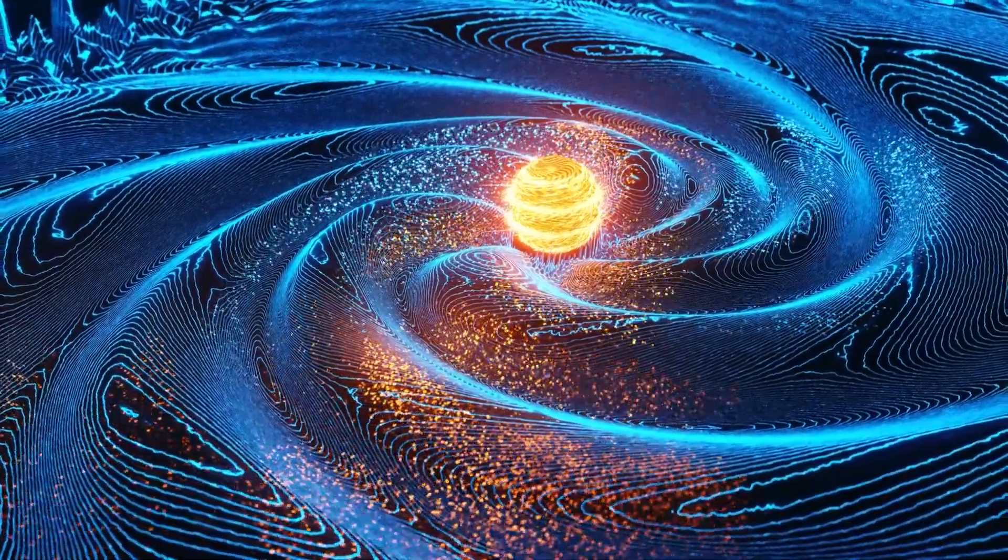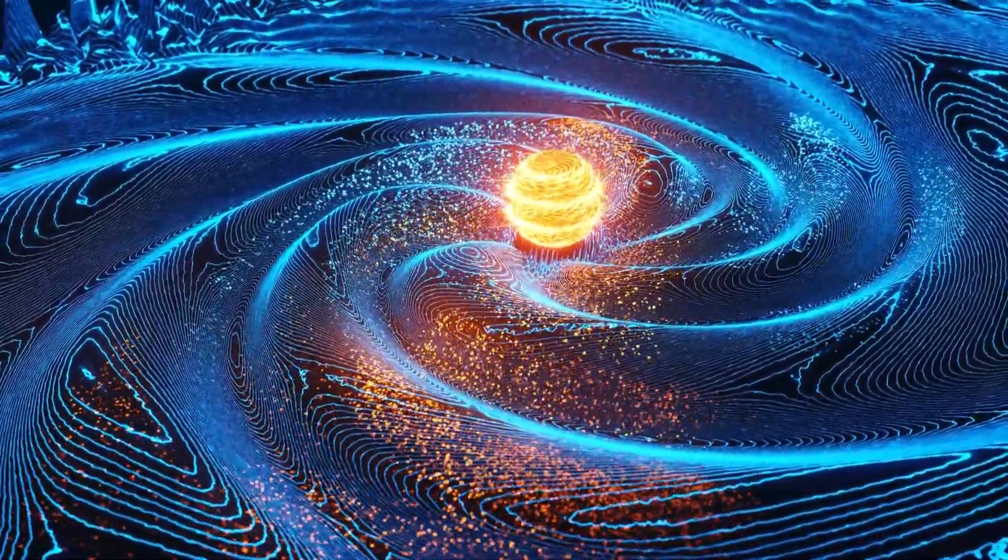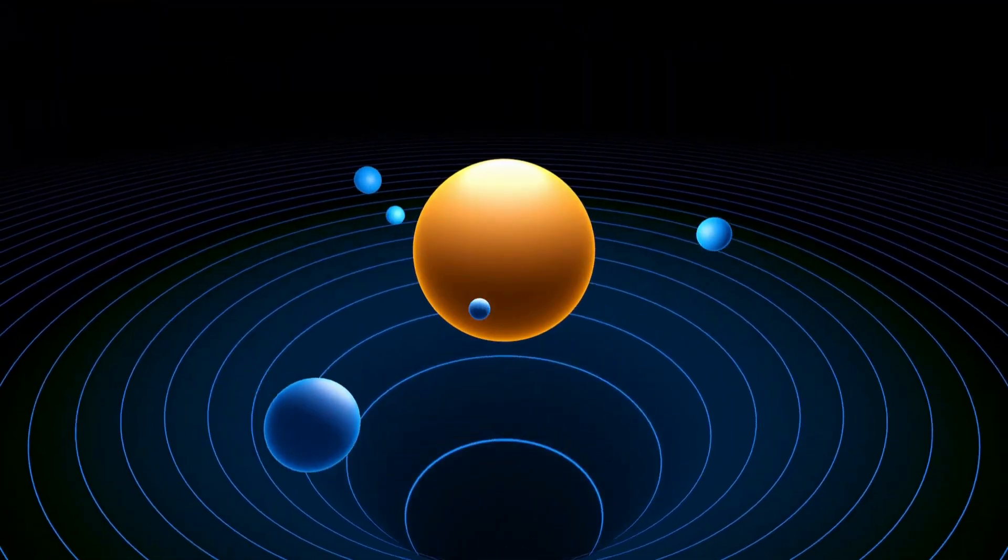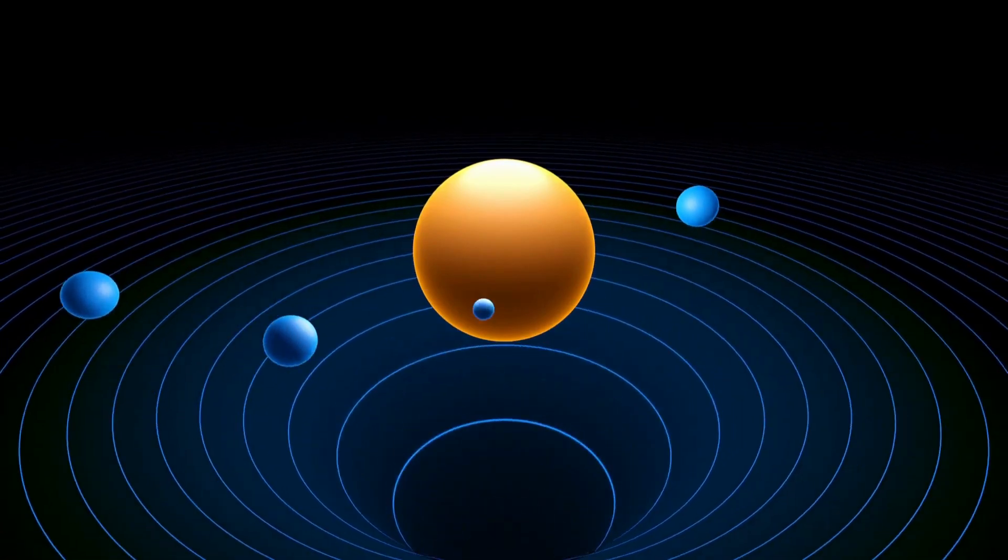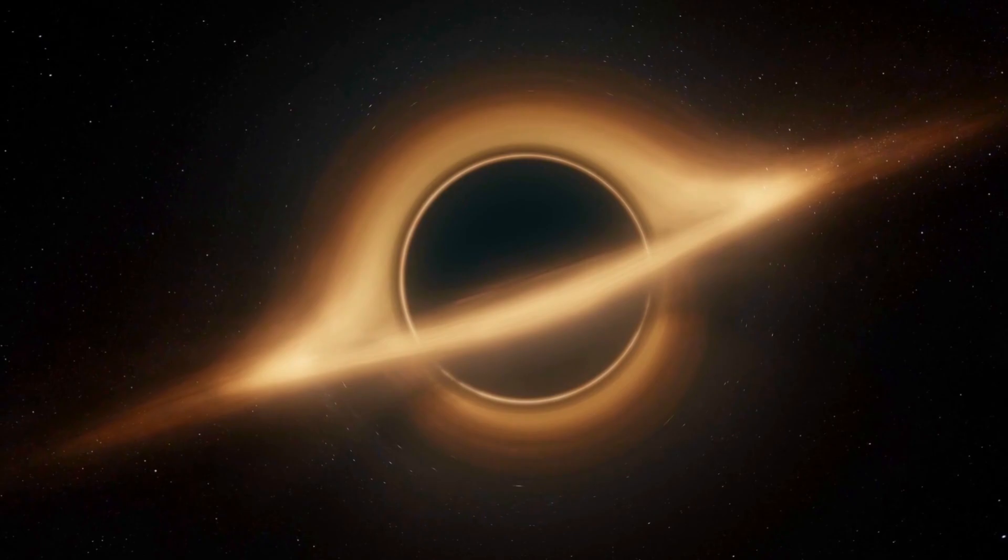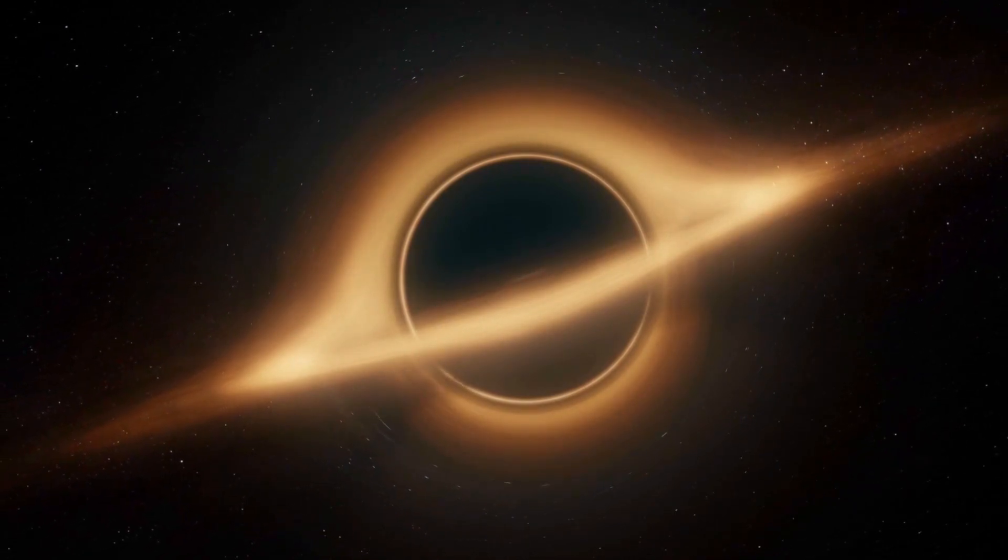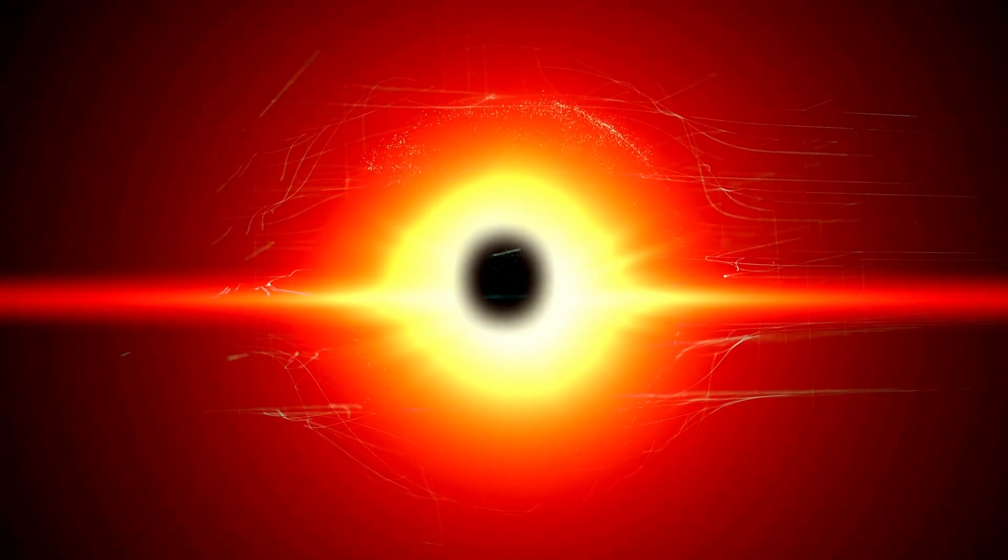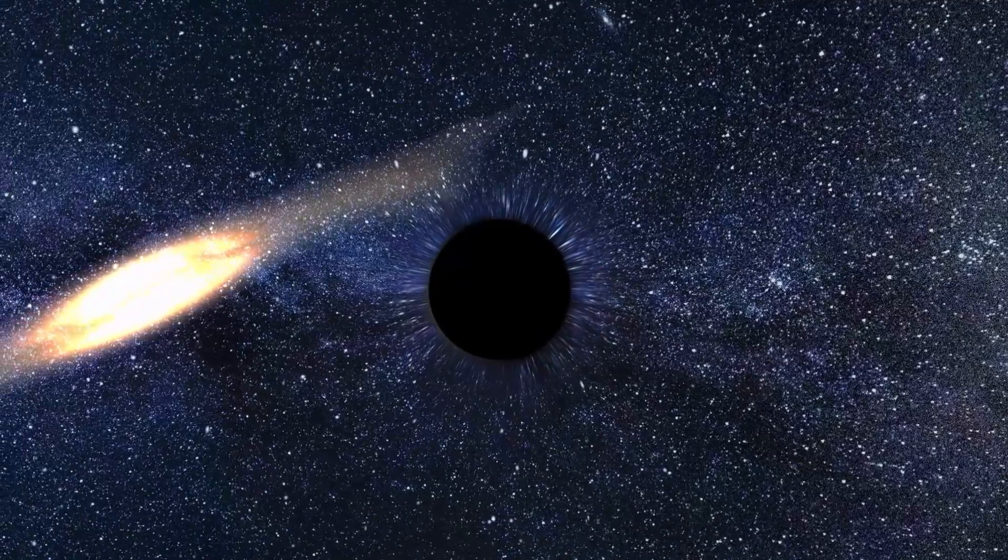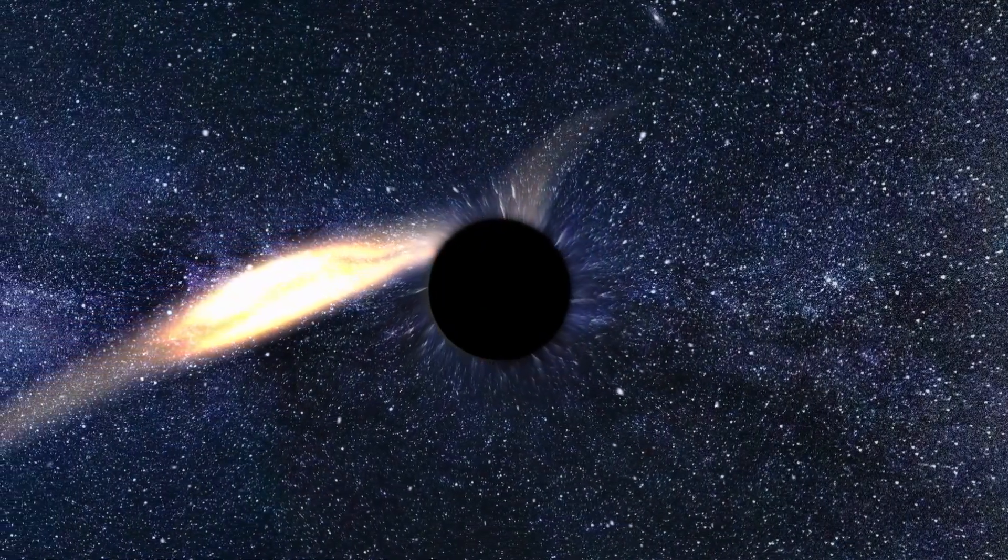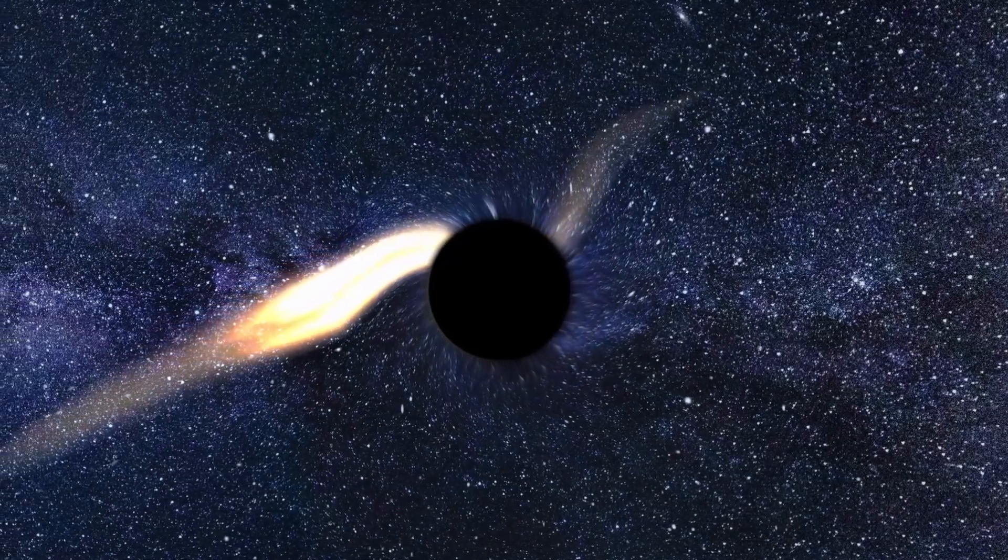The curved space and time mentioned above refers to the gravitational field. The more energetic an object is, the stronger its gravitational field, and the more pronounced the deformation it causes. Following this theory, let's talk about black holes, which are one of the most extreme objects in the universe. They have an unimaginable amount of mass and energy concentrated in a tiny space. Because of their great mass, the gravitational field of a black hole becomes very intense, creating a deep warp in the fabric of space and time.